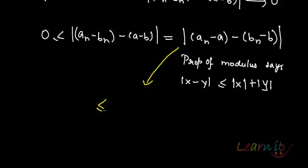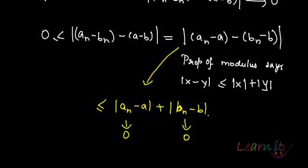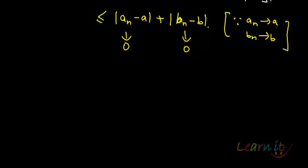So we can break it and from here we can get that this thing is less than or equal to mod(a_n minus a) plus mod(b_n minus b). And we know that this tends towards 0, this tends towards 0, because a_n tends towards a, b_n tends towards b.